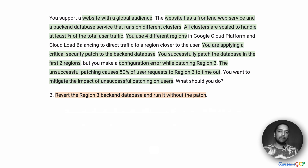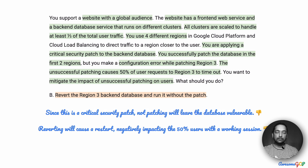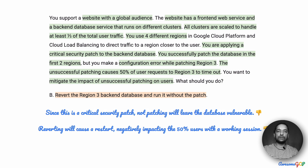Option B suggests reverting the region 3 backend database and running it without the patch. Since this is a critical security patch, that would leave our database vulnerable to any kind of attack, and that is definitely not acceptable — patching is a necessity. Additionally, if we revert it and essentially restart in the process, it is going to negatively impact the 50% of users who are already connected to region 3, causing a broken session. So option B does not work for us.